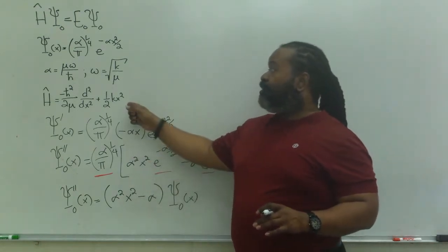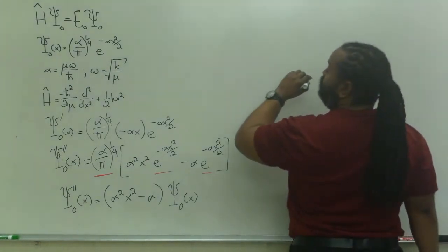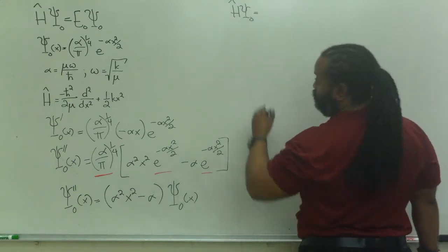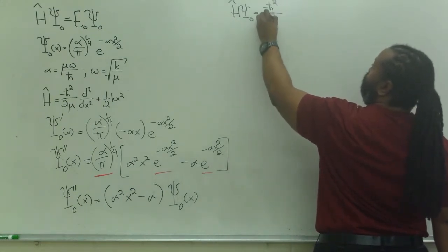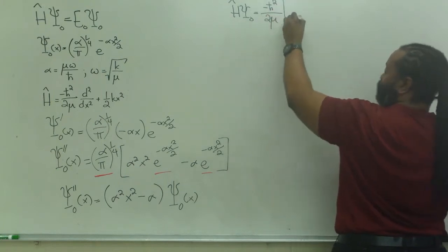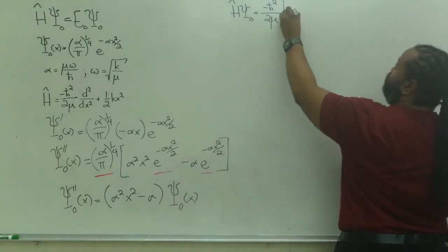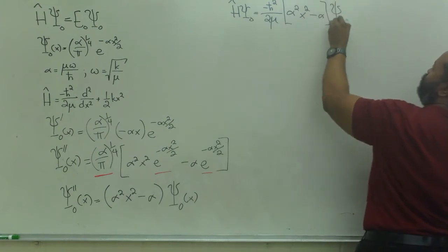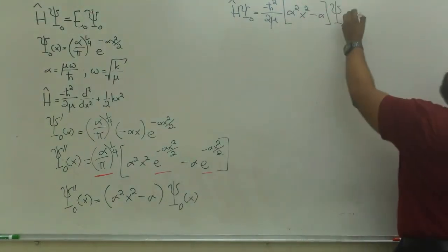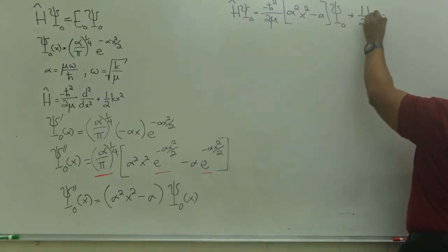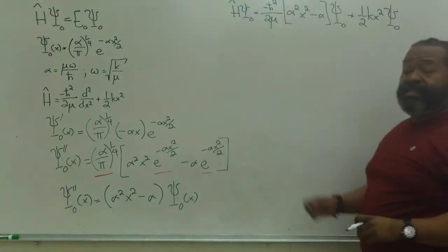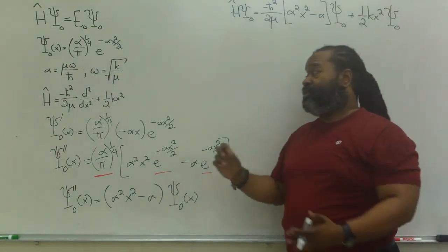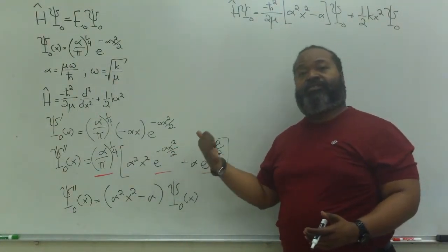So, let's take all of this, plug it into here, and we'll start working. So, if I apply the Hamiltonian to the wave function, I will have minus h bar squared over 2 mu, and I'm going to have this polynomial times the original wave function plus 1 half kx squared times the original wave function. That looks promising because now I can factor out the original wave function and hope that everything cancels to give me the correct value for the energy for v equals 0.